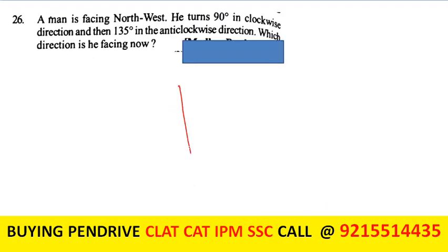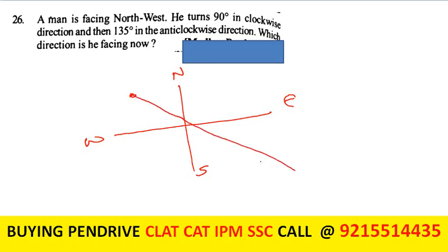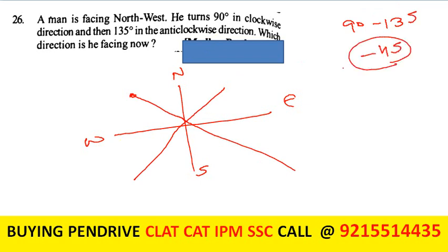A man is facing north-west. He turned 90 degrees clockwise. North-west is at 135 degrees (anticlockwise from east). Adding 90 clockwise: 135 - 90 = 45 degrees, which is north-east... The calculation gives the final direction as west. The answer is west direction.